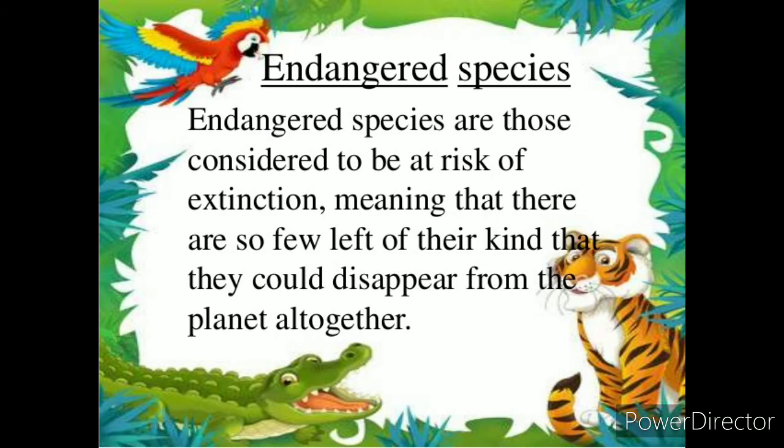The first is the Endangered species. A species which is not likely to survive and is in danger of extinction — if the negative factors continue to operate — is called an Endangered species. This means these species can become extinct at any time.